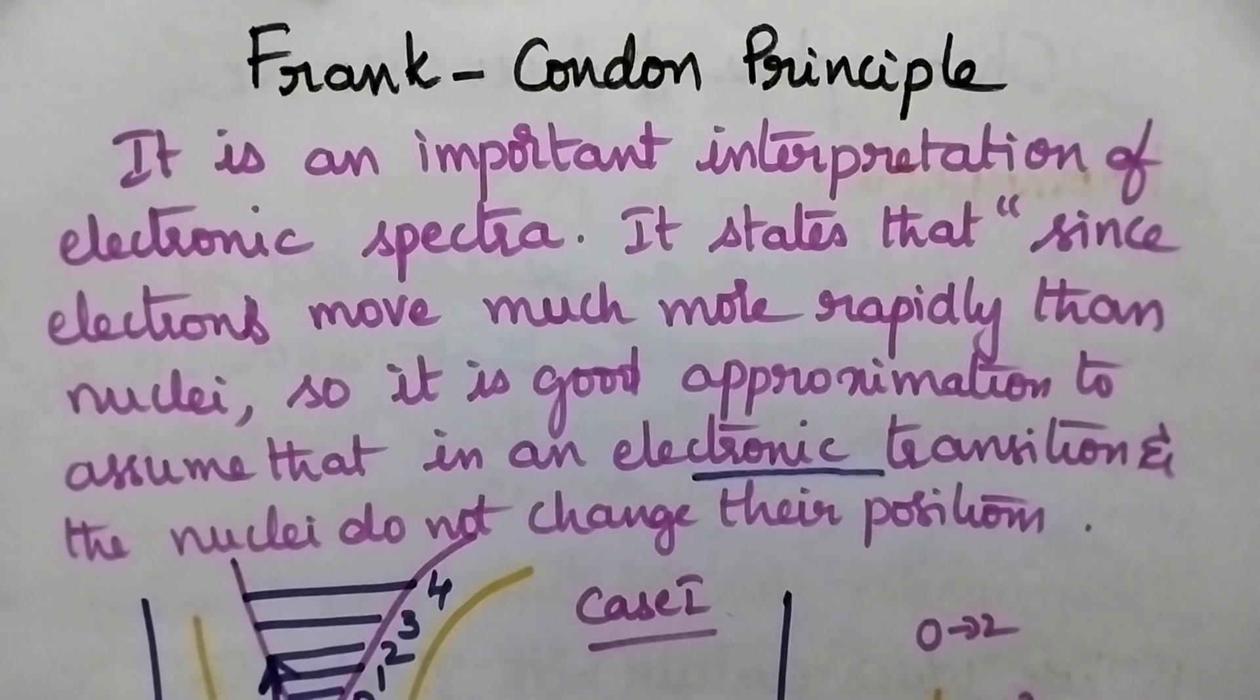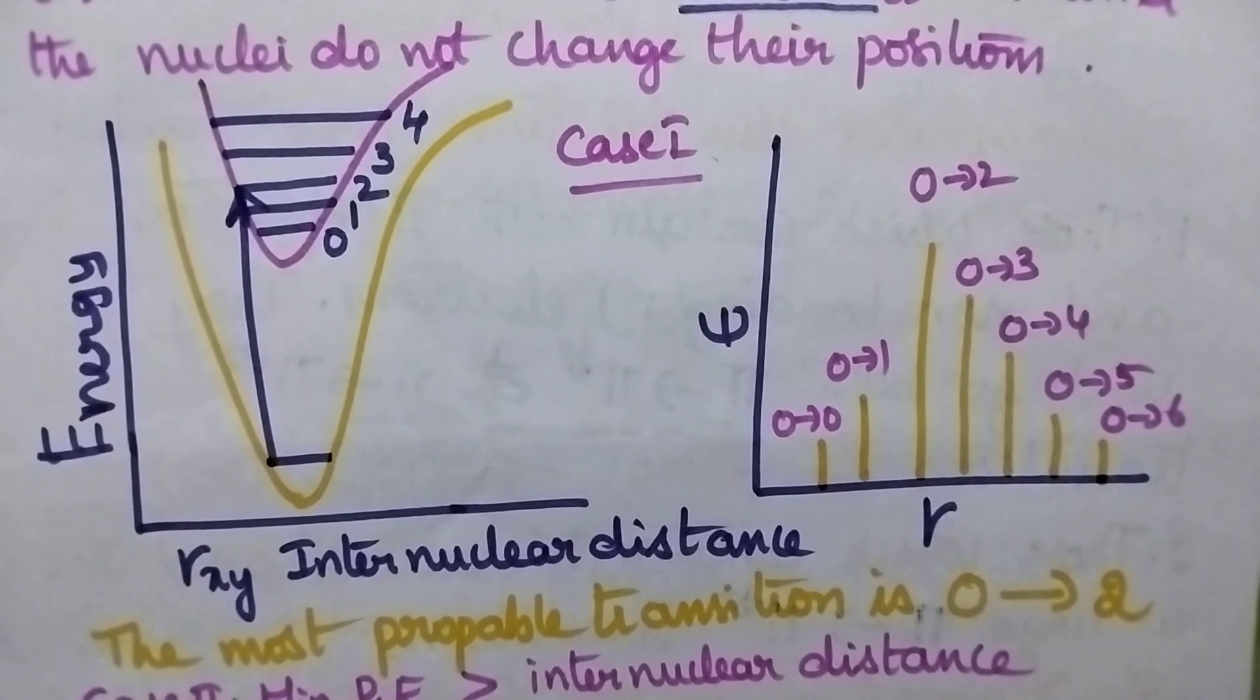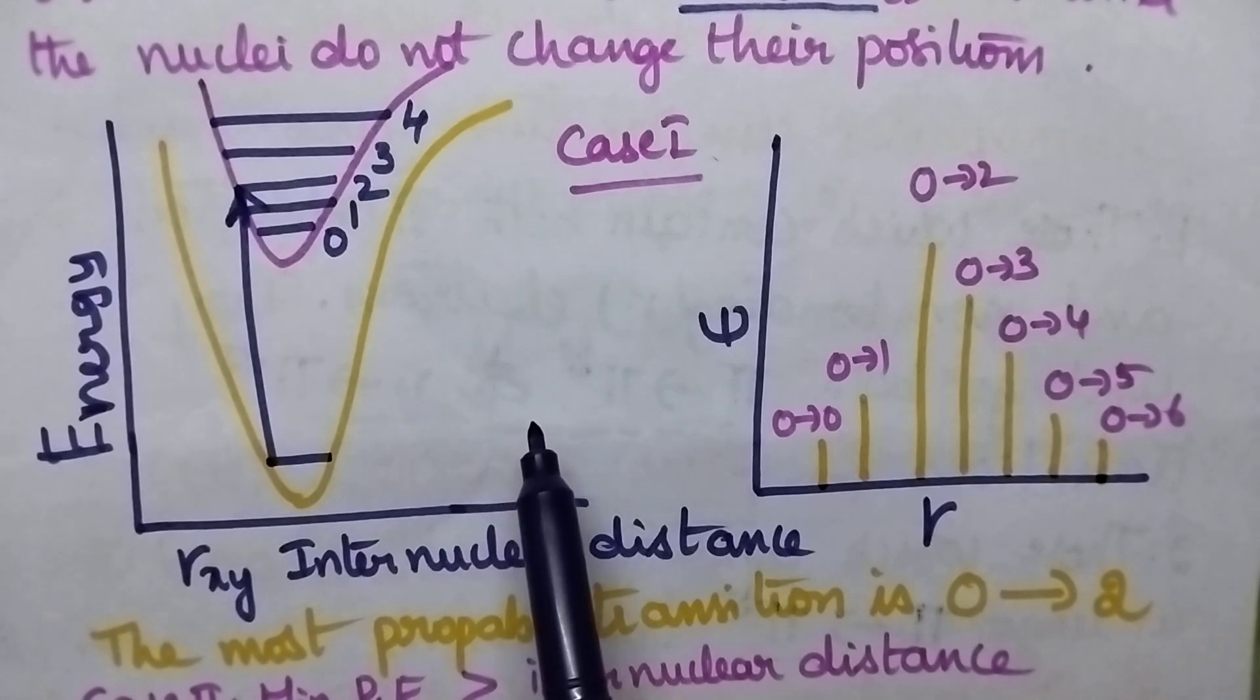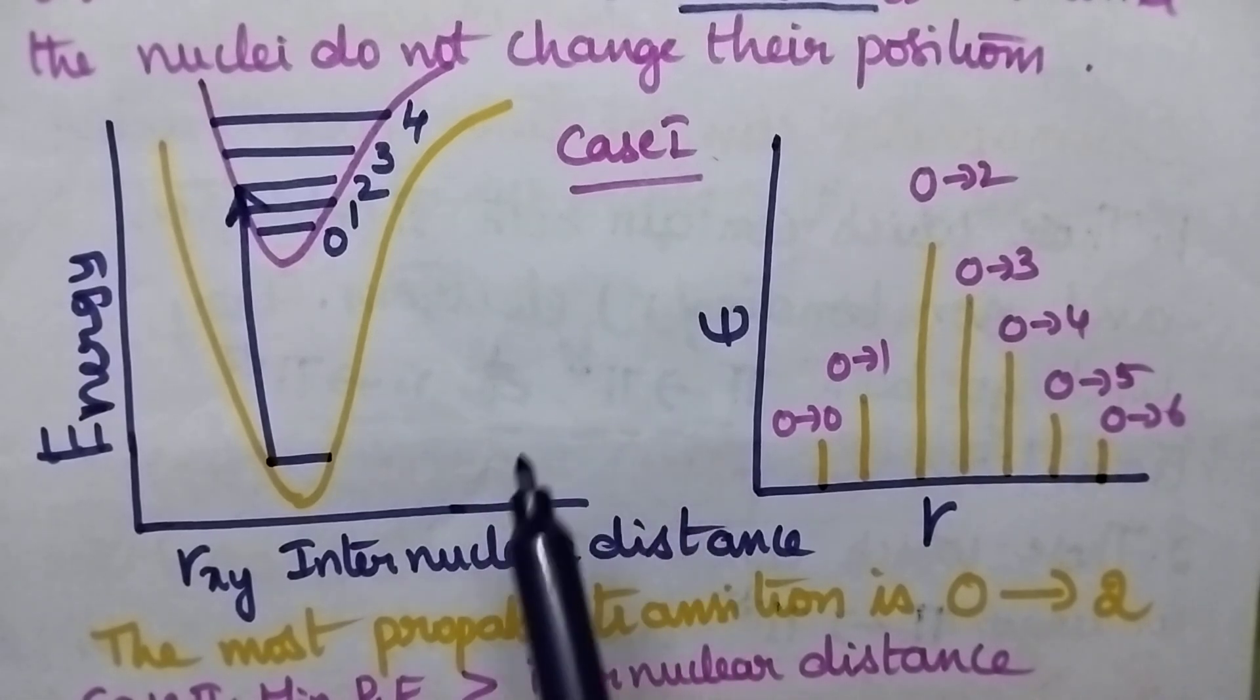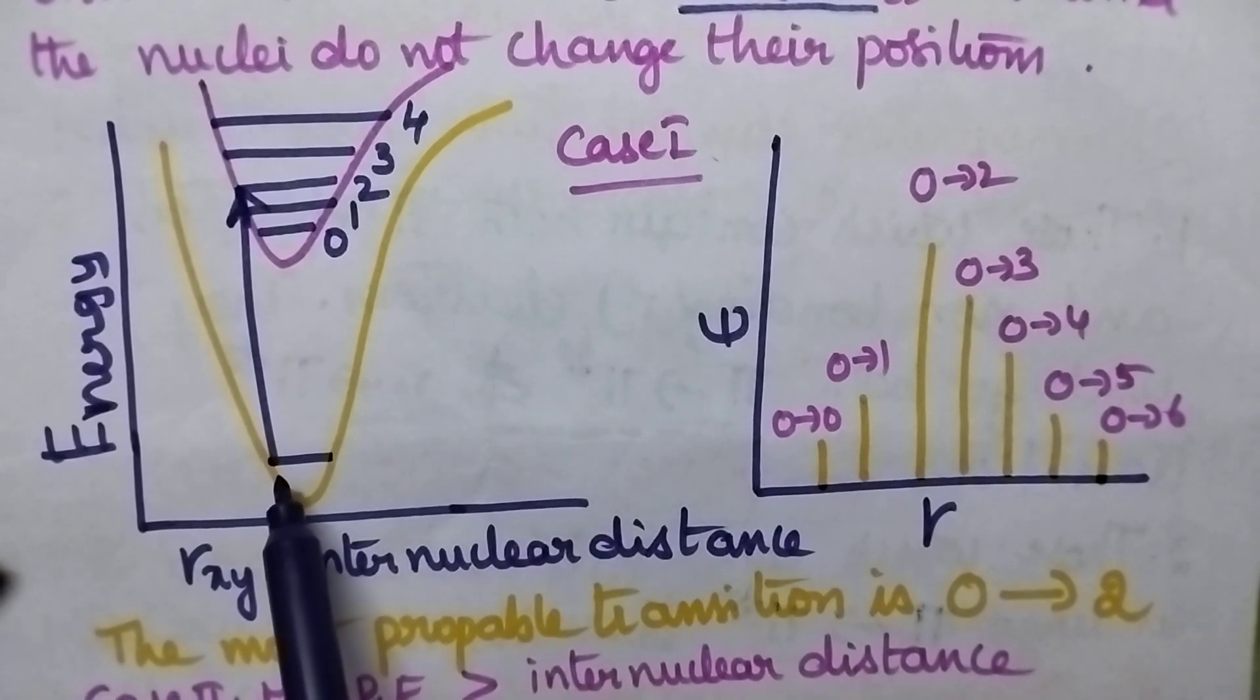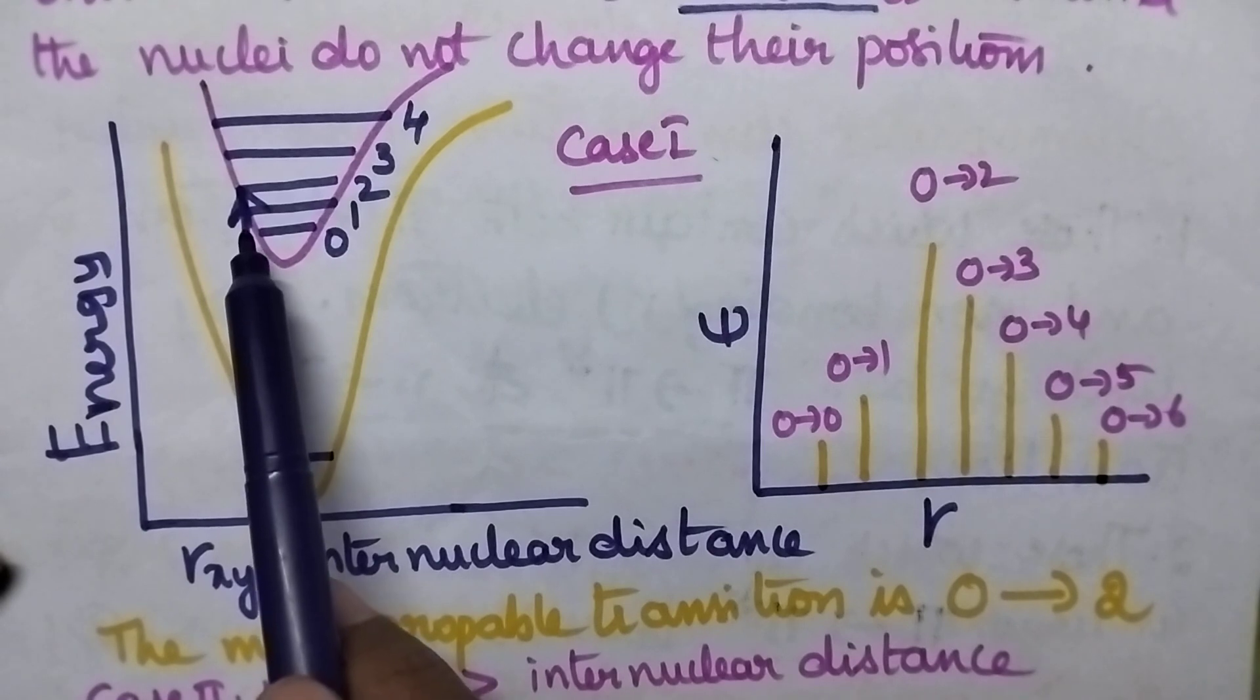To better understand the Frank-Condon principle, let's consider two cases. In case 1, a molecule is exposed to UV radiation. If the UV radiation has sufficient energy, the electron in the ground state will be transmitted to the excited level.